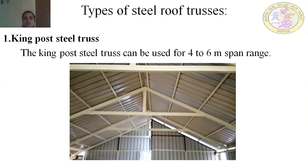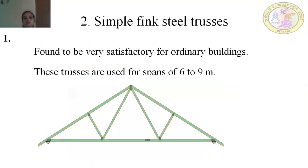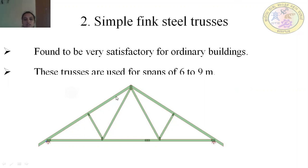Simple fink steel trusses are found to be very satisfactory for ordinary buildings. These trusses are used for spans of six to nine meters. The truss includes inclined rafter members, a horizontal tie beam, and inclined struts.